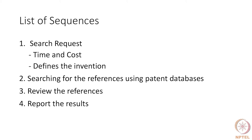Once this is done, the second step is to actually do the search, and this search is done by the searcher. Once the search is done, the third step is to review the references developed by the searcher, because a searcher may use a free database — such as databases provided by various patent offices, Free Patents Online, or Google's patent search — to collect a set of references. The fourth step is to report the results to the client, which could be the inventor himself or the patent attorney.